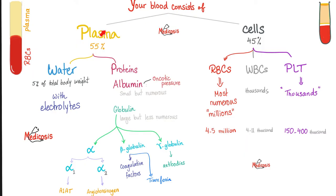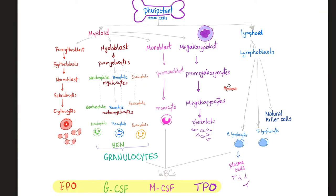Here's your blood. It's made of plasma, which is the liquid component, and cells, which include red blood cells, white blood cells or leukocytes, as well as platelets — erythrocytes, leukocytes, and thrombocytes. All blood cells come from the bone marrow, specifically pluripotent stem cells, divided into myeloid stem cells and lymphoid stem cells. Red blood cells, platelets, and many white blood cells come from myeloid lineage, but lymphocytes come from lymphoid lineage.